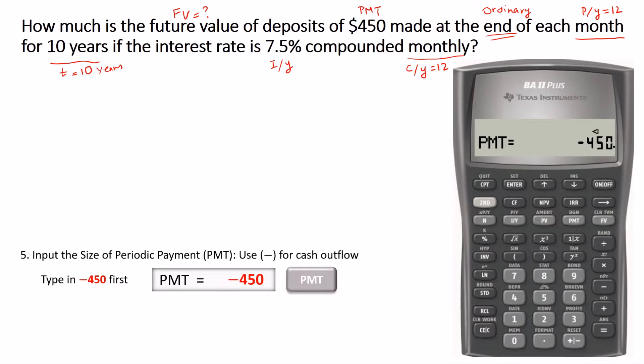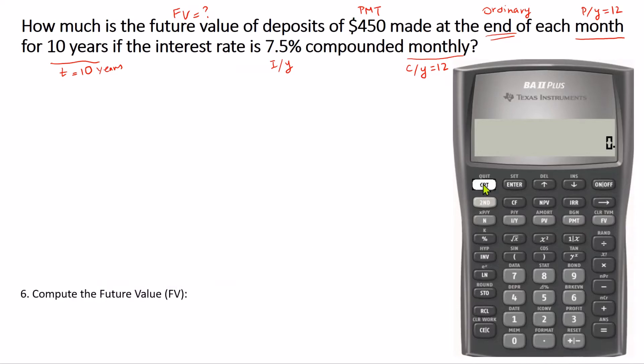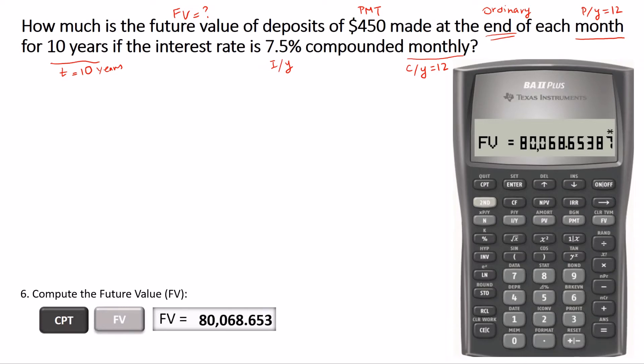Now we clear the sheet and finally we compute the future value. In order to do that, we press compute button here and press FV. And there you go. So the future value of this annuity is $80,068. If we are to round off this number to nearest cents, then it'd be $80,068 and 65 cents.